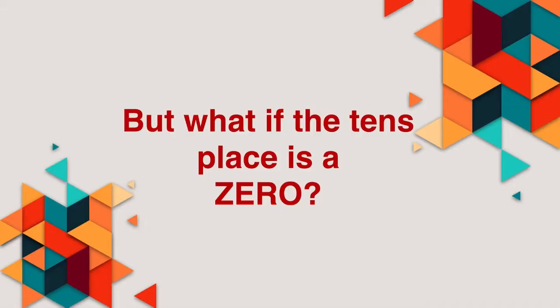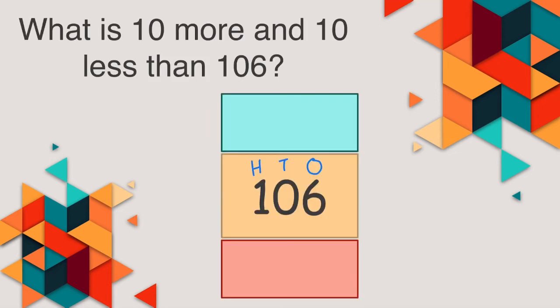Now next, what if the tens place is a 0? So what is 10 more and 10 less than 106? Now this is a big number. But as I told you, only our tens digit will change.